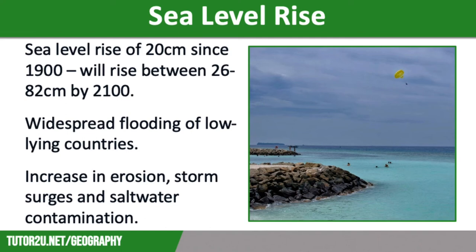One city at risk from sea level rise is London. In 1982 the Thames Barrier was constructed to stop tidal surges coming up the Thames and into London. Since then it has been closed over a hundred times. When it was designed it was expected to be breached once every 1,000 years. However, if sea levels rise by 50 centimetres, the risk of breach would increase to once every 100 years.